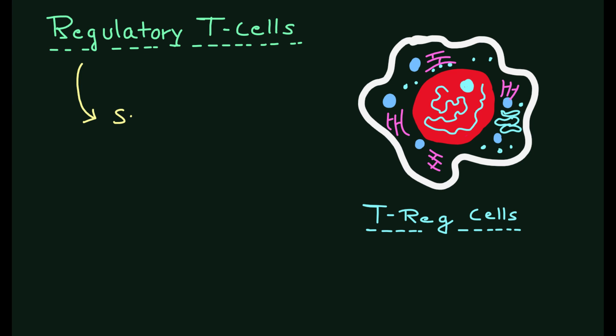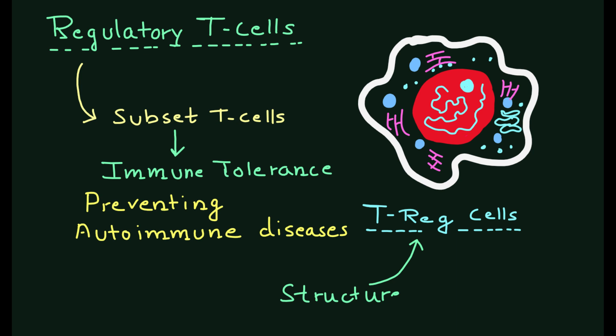Regulatory T cells or Tregs are a specialized subset of T cells that play a crucial role in maintaining immune tolerance and preventing autoimmune diseases. In this video we will explore the structure and the functions of Tregs in more detail.